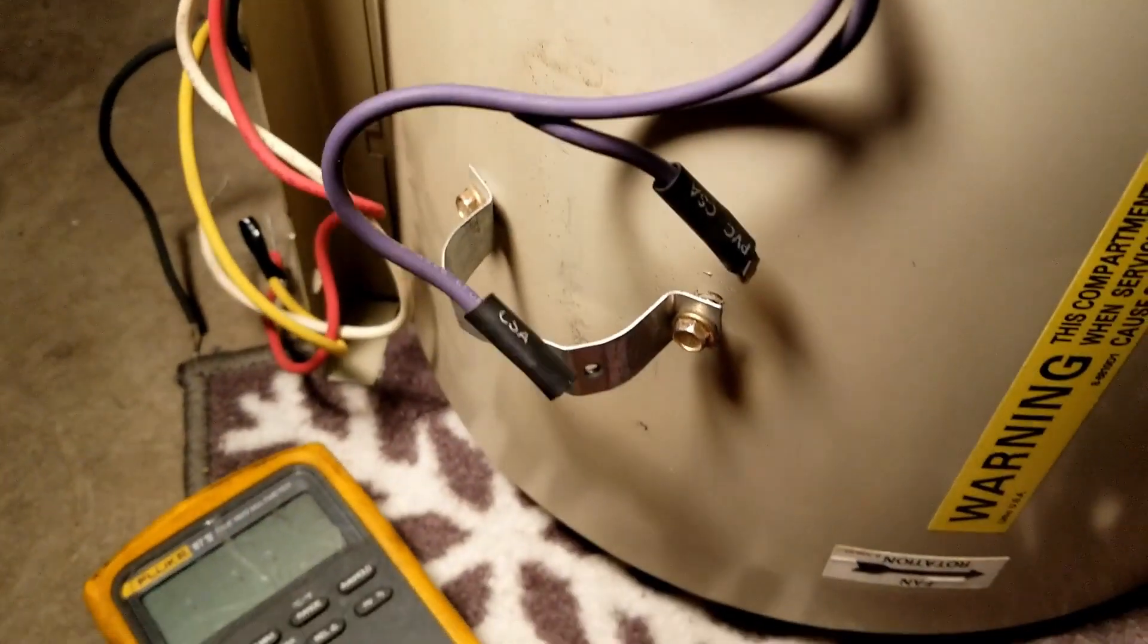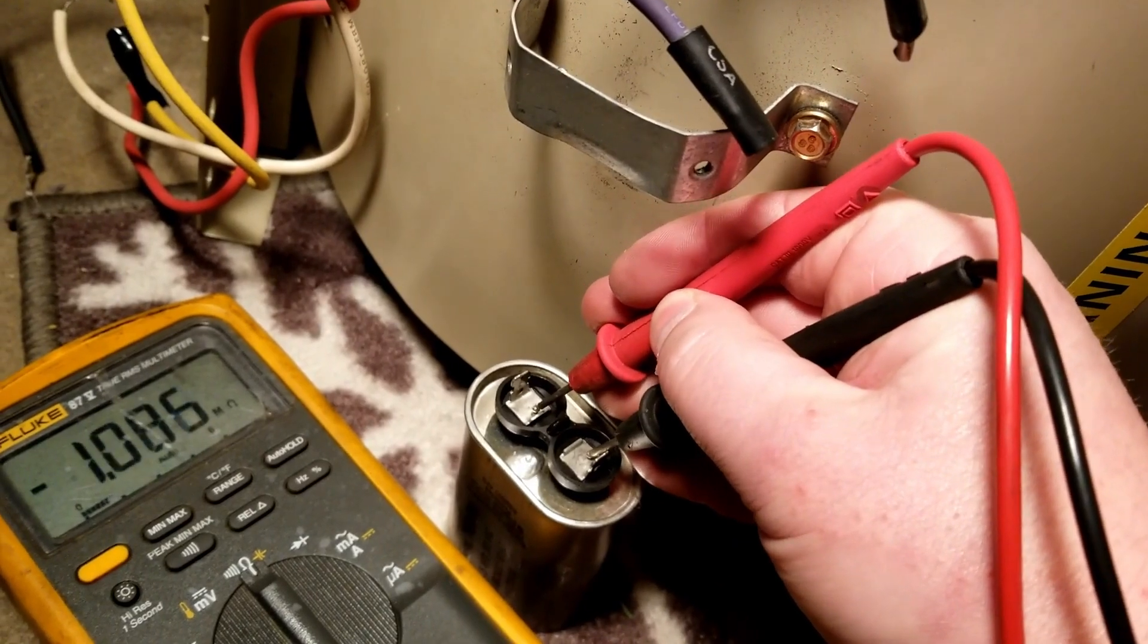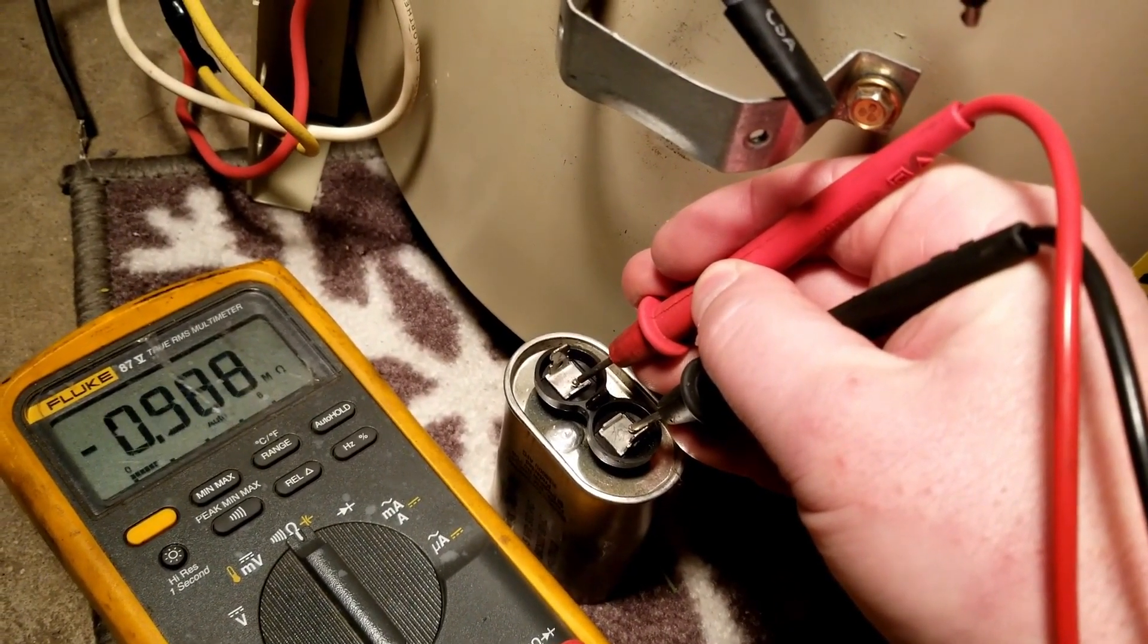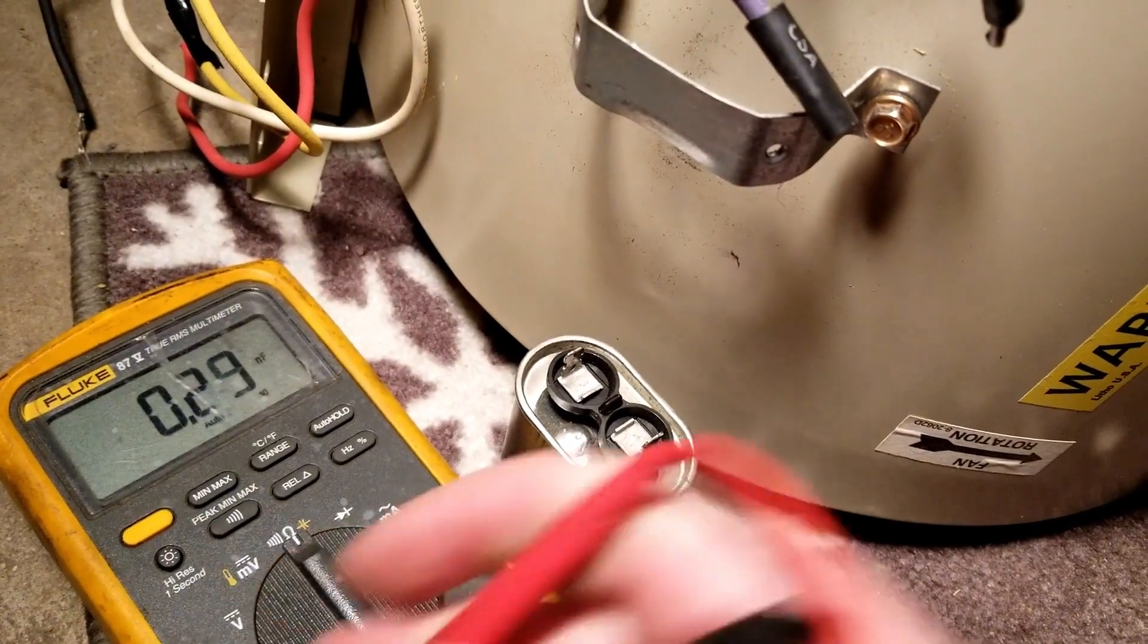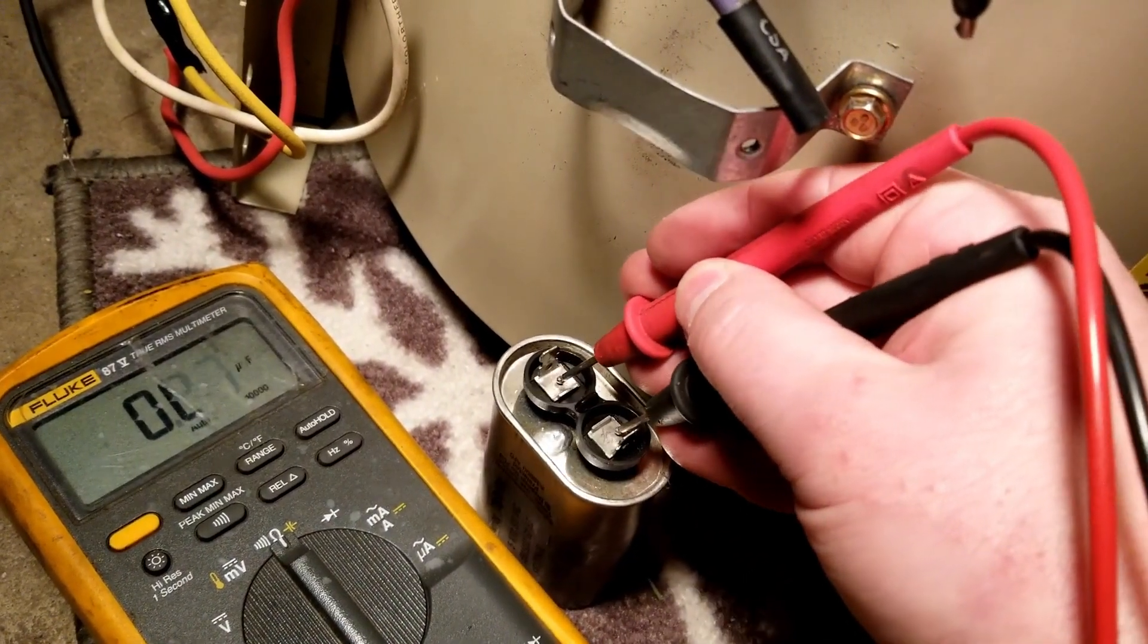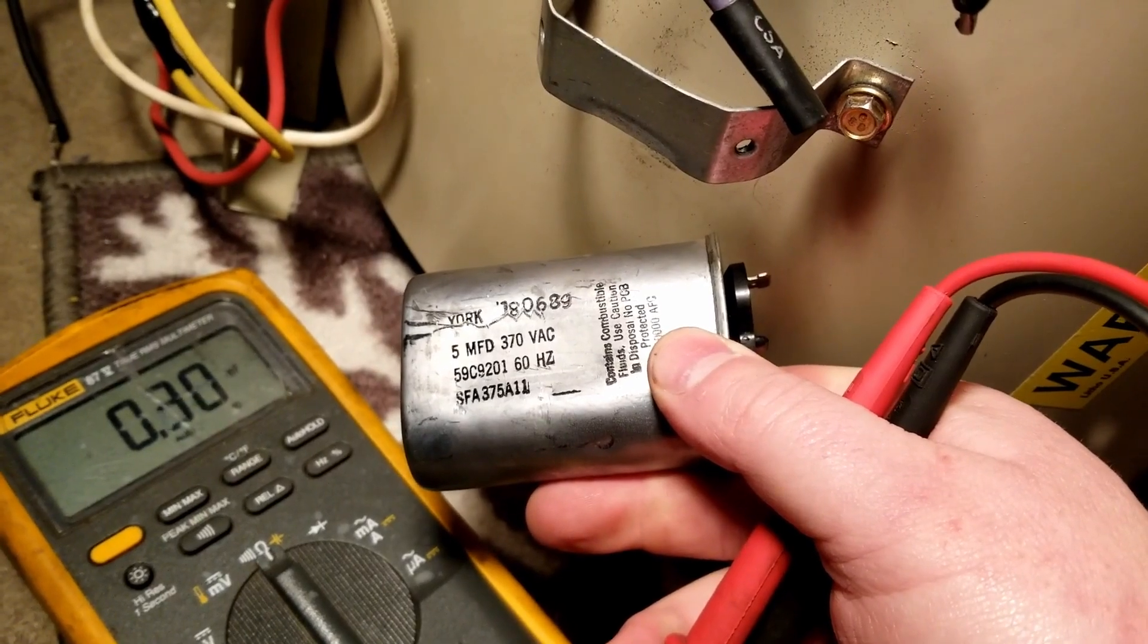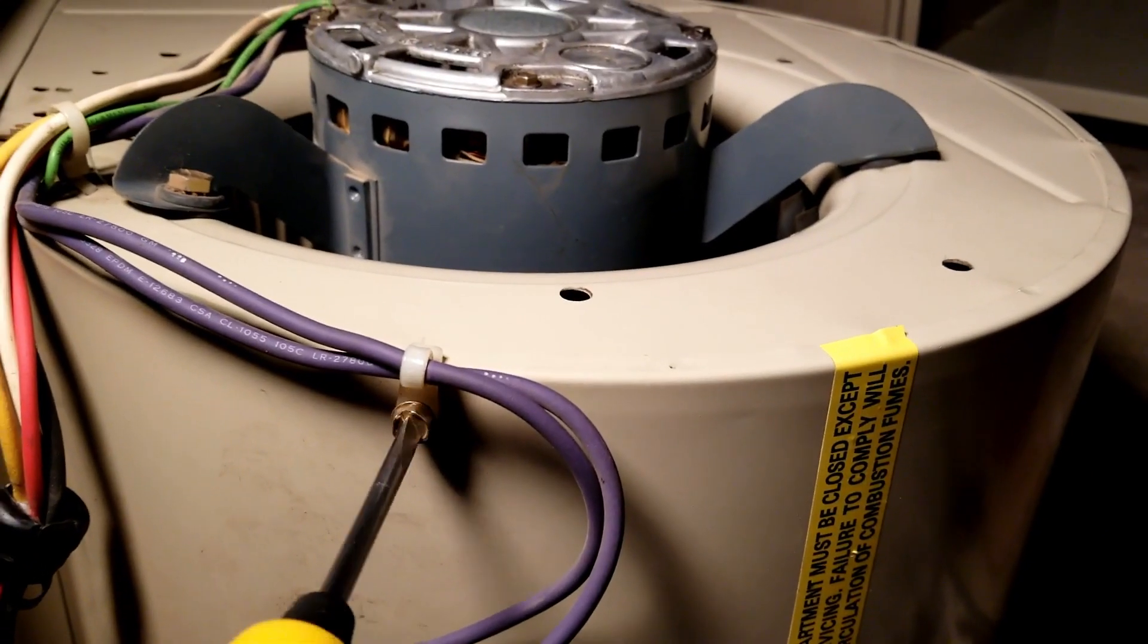And then we can slide that capacitor out. Start out with the meter on resistance. So a good capacitor on resistance should cycle between zero and a whole bunch of resistance, and that's due to how the meter works. So now we'll push our little button to get to the capacitor testing and we got 4.9. That's real close to five, so Mongo's happy with that. That's still a good capacitor.